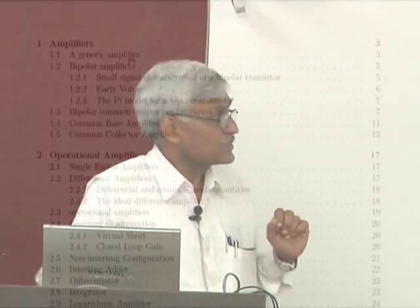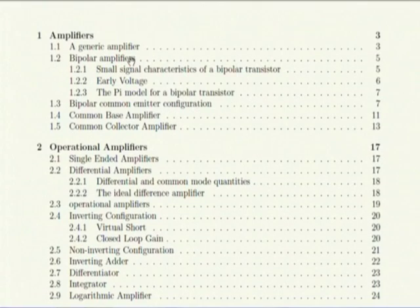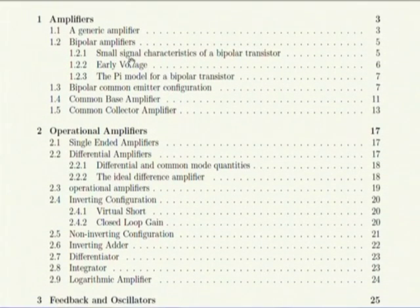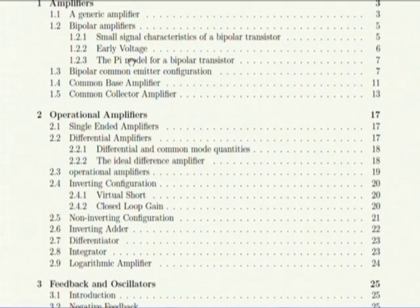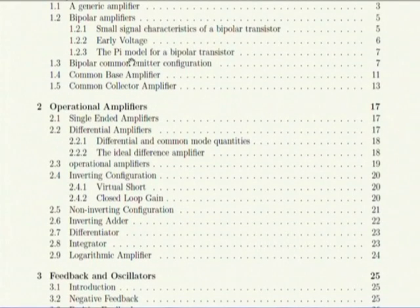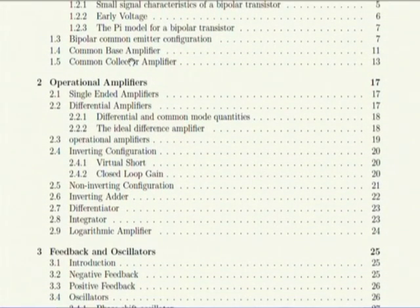This set of notes was made for exactly this course and put up on our Moodle site. Essentially it covers a generic amplifier, then bipolar amplifier — first the transistor characteristic, then early voltage which determines G0, then the pi model of the transistor, and then bipolar common emitter, common base, and common collector amplifier.